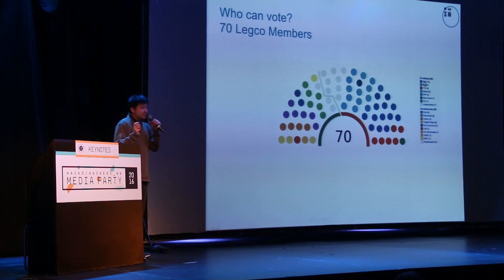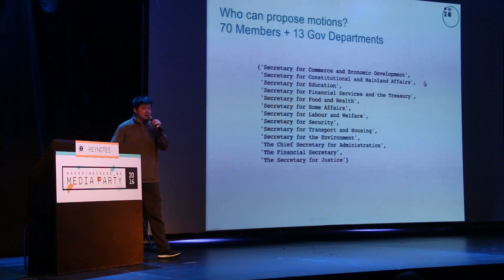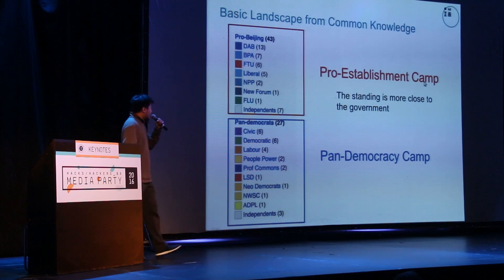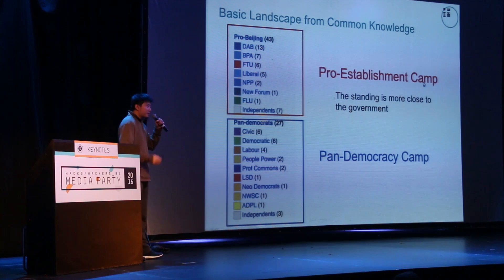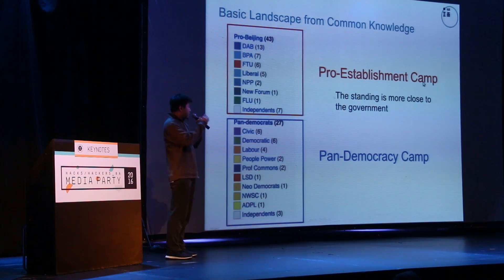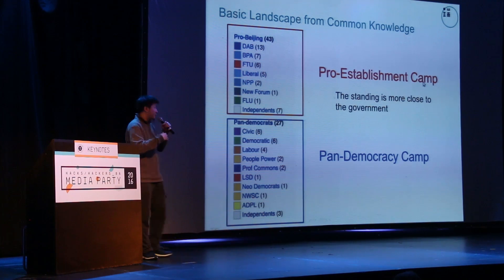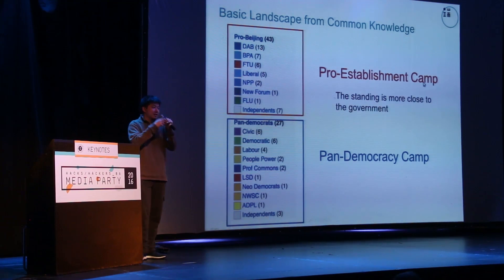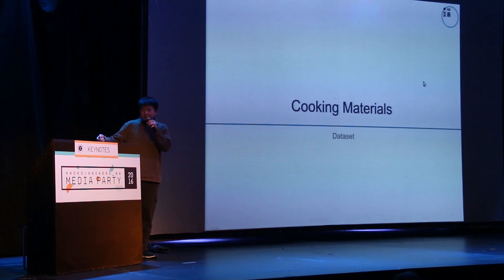So who can vote? Of course, there are 70 members who can vote for certain bills or motions. And who can propose motions? Those 70 members can propose motions, and besides that, we also have some government departments who can propose their own bills. If you know some context about Hong Kong and China, you probably know that currently the environment is a bit fragmented. There are some people who are pro-Beijing — the central government of China — and who are anti-Beijing. One camp is called pro-establishment, who are closer with the government and also to Beijing, and the other is called pan-democracy.